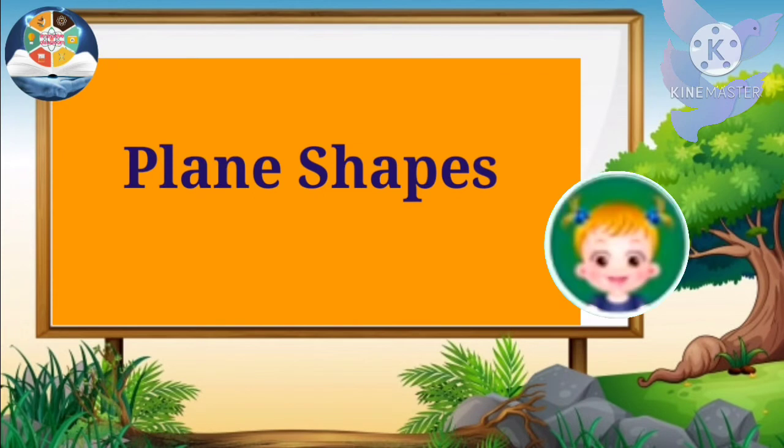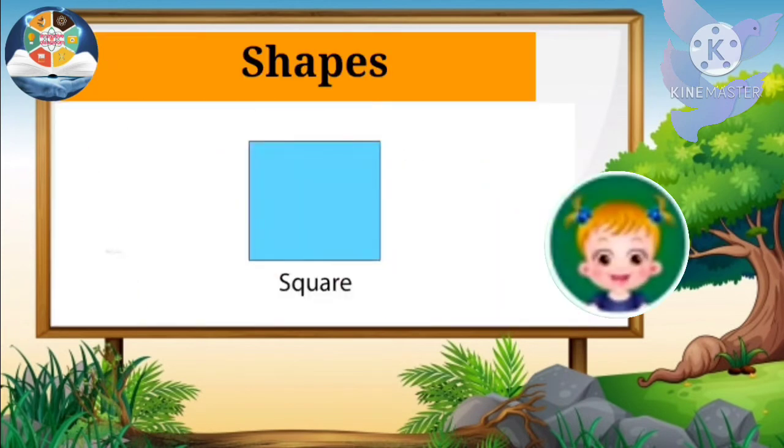Plain Shapes: Square. This is a square. It has four sides and four corners. All four sides of a square are equal.